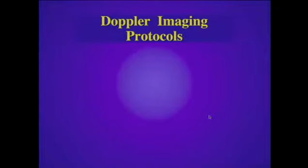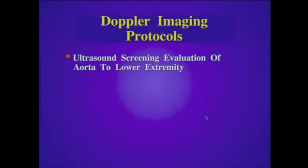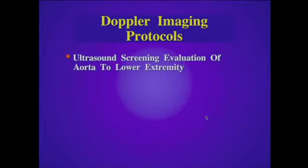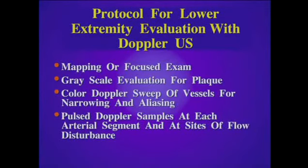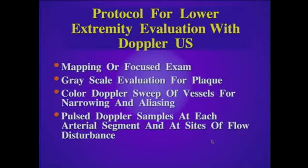There are different Doppler imaging protocols depending on the situation. One can perform ultrasound as a screening evaluation of the abdominal aorta to the lower extremity, or we can do a detailed study of the level or segment of interest identified from the indirect tests. The protocol for lower extremity evaluation can be either a mapping or a focused exam. In either case, we'll use grayscale to evaluate for plaque, color Doppler to identify areas of abnormal flow by sweeping vessels for narrowing and aliasing, and pulse Doppler to sample each arterial segment and at sites of flow abnormality.